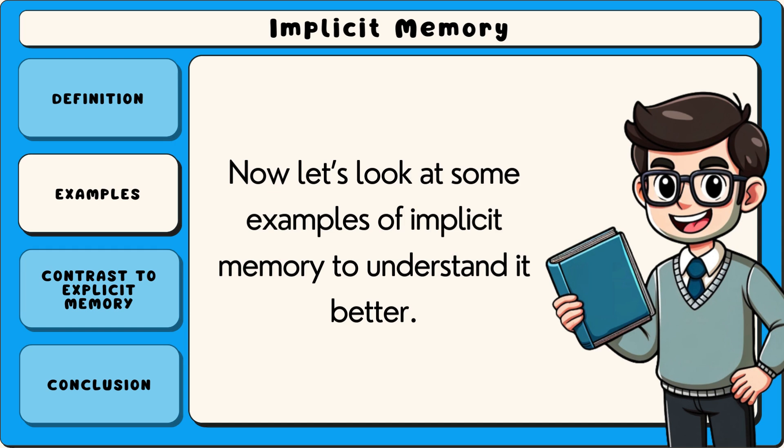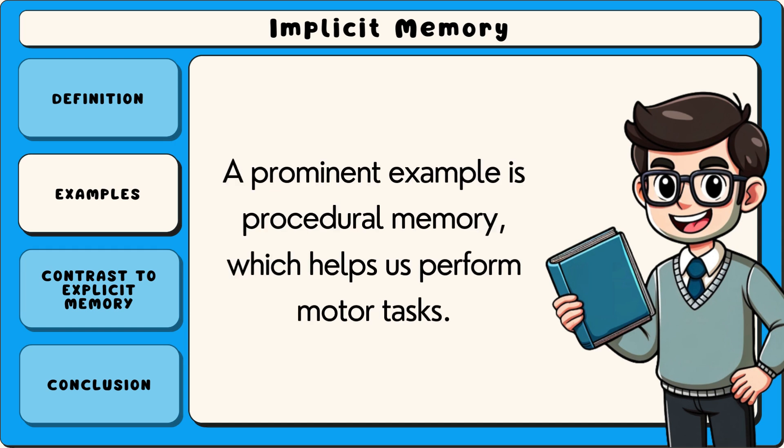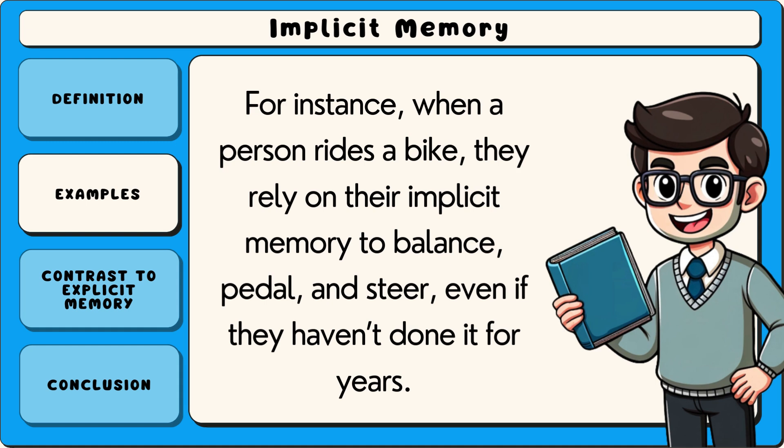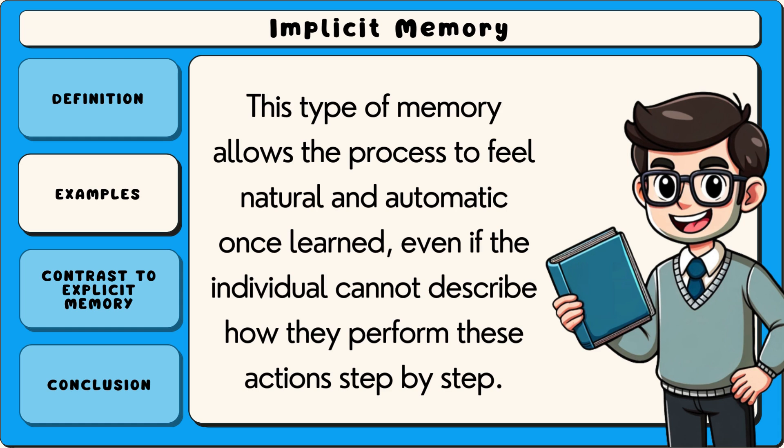Now let's look at some examples of implicit memory to understand it better. A prominent example is procedural memory, which helps us perform motor tasks. For instance, when a person rides a bike, they rely on their implicit memory to balance, pedal, and steer, even if they haven't done it for years. This type of memory allows the process to feel natural and automatic once learned, even if the individual cannot describe how they perform these actions step by step.